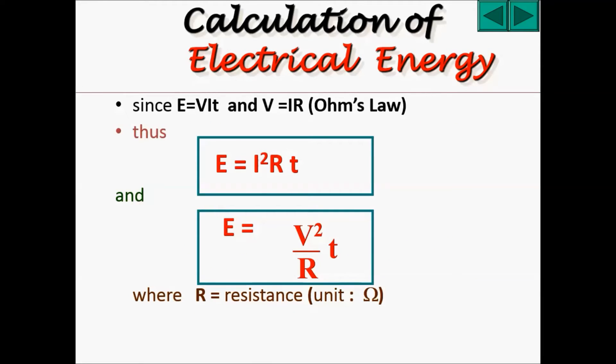This formula can then be converted into two other subformulas, given that you can include the formula V equals to IR into this formula, E equals to VIT. Therefore, you can form two other subformulas, which is E equals to I squared RT, and E equals to V squared divided by R times T.